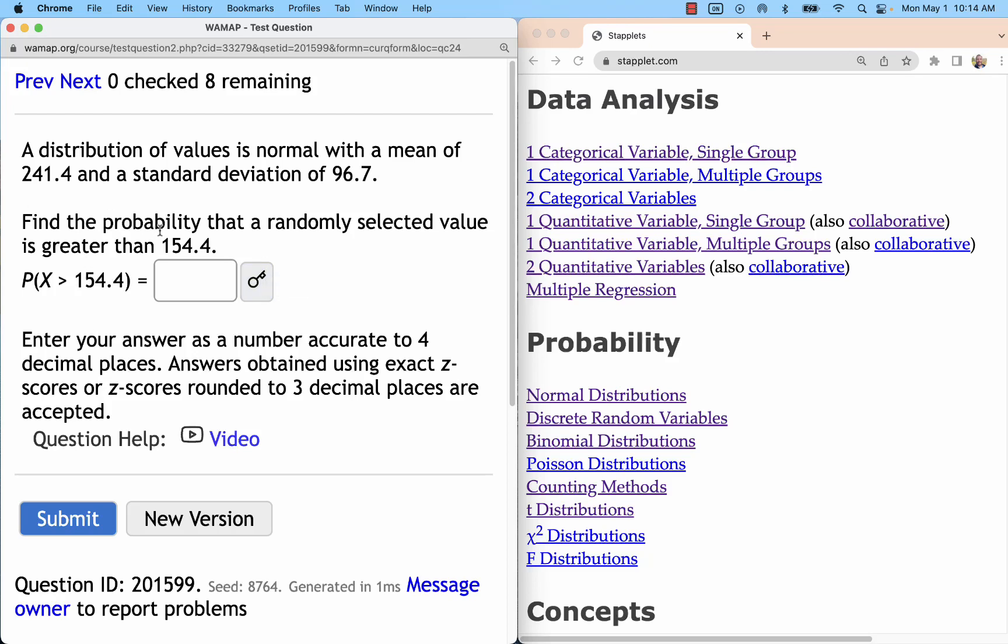Now we're looking for the probability that a randomly selected value is in a certain range that's given. What we're trying to do is find the area under a normal curve with the given properties.